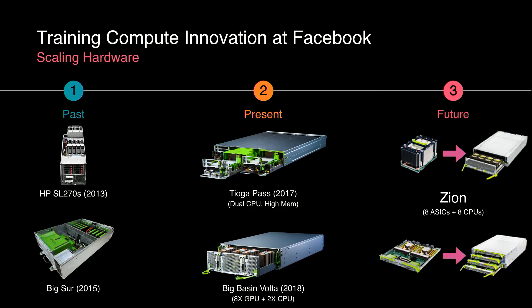As our machine learning use cases grew, we realized we needed a bit more flexibility. That's when we designed Tioga Pass and Big Basin Volta, which allowed us to disaggregate CPU and GPU and modify the ratios of different types of compute needed for machine learning training. Looking forward, the future is all about customization. That's why we recently announced our Zion hardware training platform, which leverages up to eight CPUs and up to eight custom accelerators in a standard form factor — all to increase developer productivity and overall iteration speed.